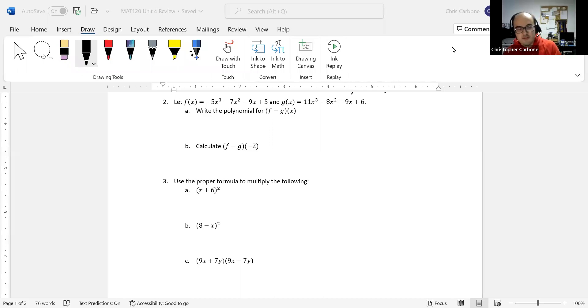For question number two on polynomial functions, we let f(x) be negative 5x cubed minus 7x squared minus 9x plus 5,